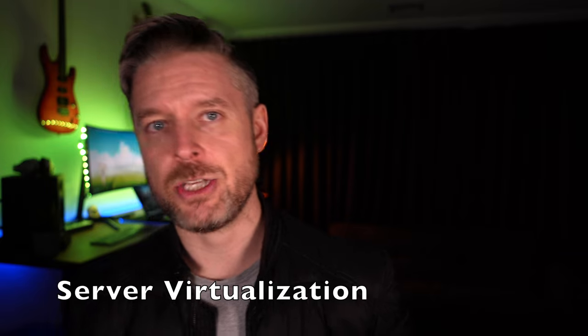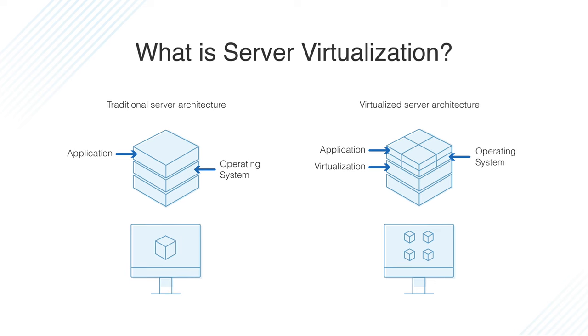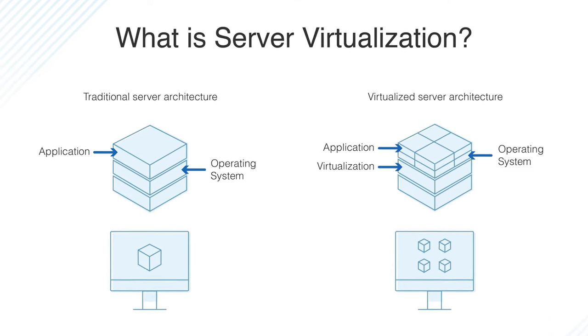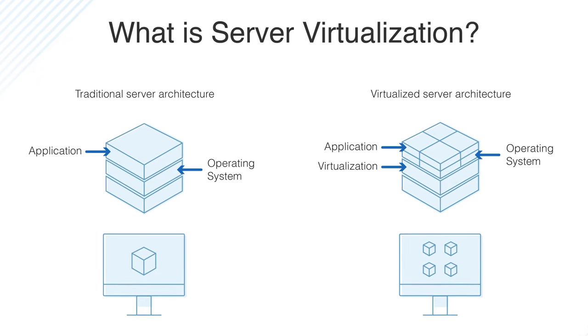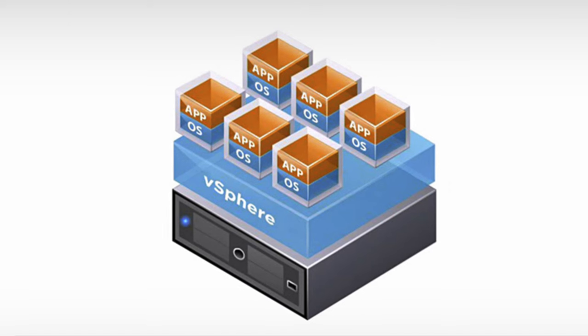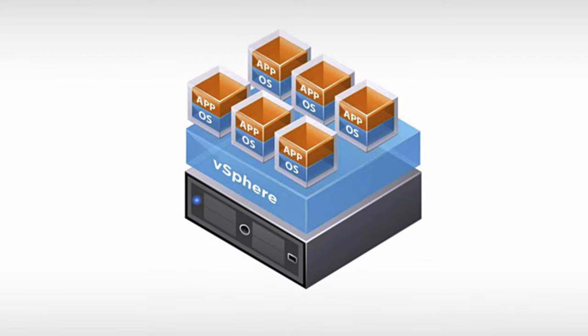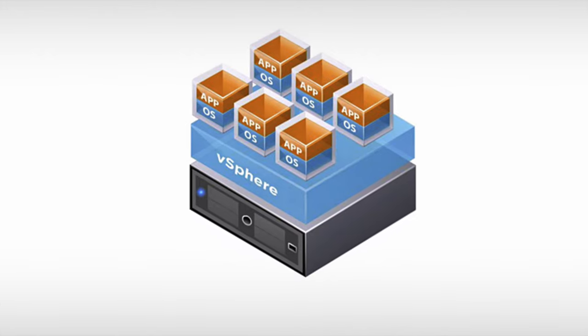Next is server virtualization, where the servers themselves are converted into a virtualization host. You build Windows and Linux VMs within a physical server. The big one here is VMware ESXi, which uses vSphere, and you've also got vCenter. VMware's ESXi is a fully fledged operating system — you install it onto a physical computer and convert that machine into a hypervisor.